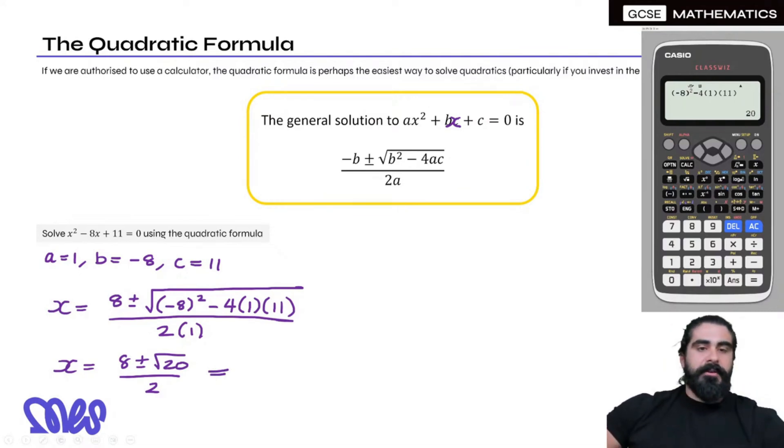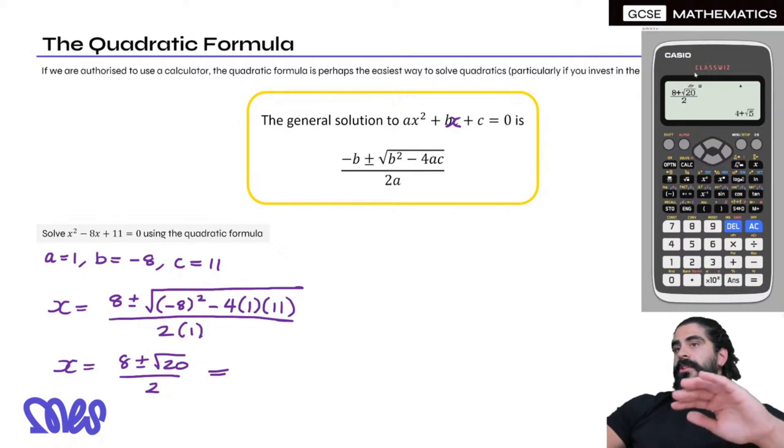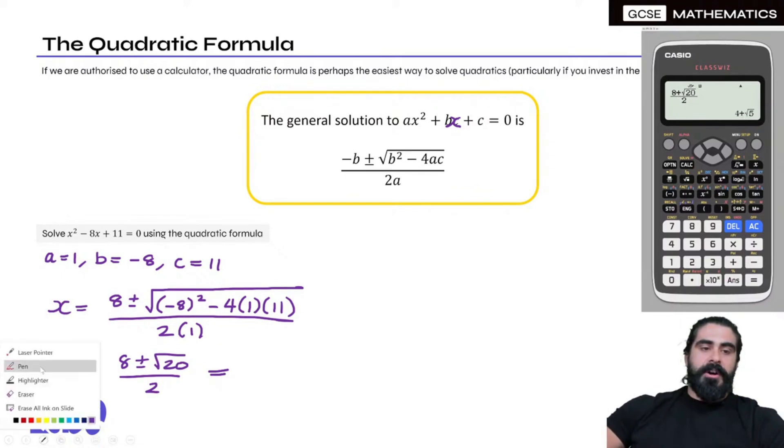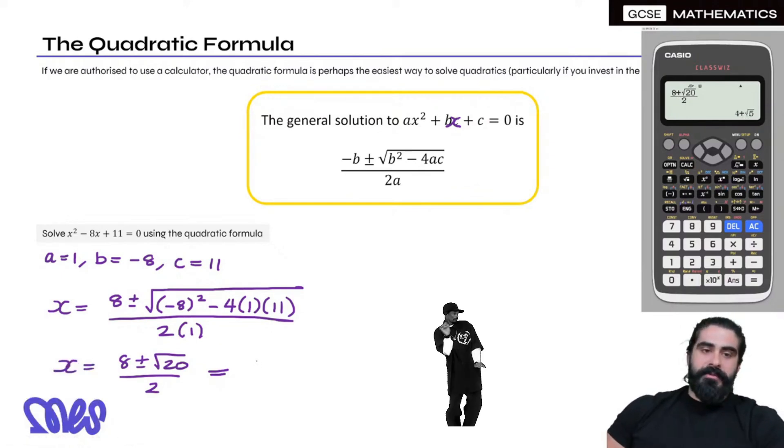It's really weird, edXL exam boards, they're really strange in that sense. Let's type the whole thing in. So you have fraction 8 plus root 20 over 2. You do not need to go back and change the plus to a minus because it'll just be 4 minus root 5. So your answer here is 4 plus or minus root 5.